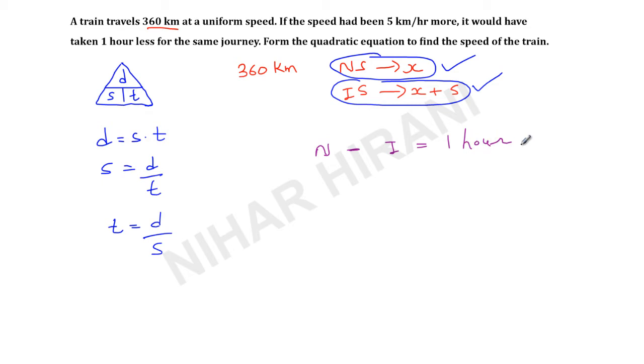If I want to know the time taken when train travels at normal speed, that will be distance over speed. So distance is 360 and speed is X. This is the time taken at normal speed. Now if the speed had been 5 km/hr more, then time will be distance 360 over speed X plus 5, and that is equal to 1.